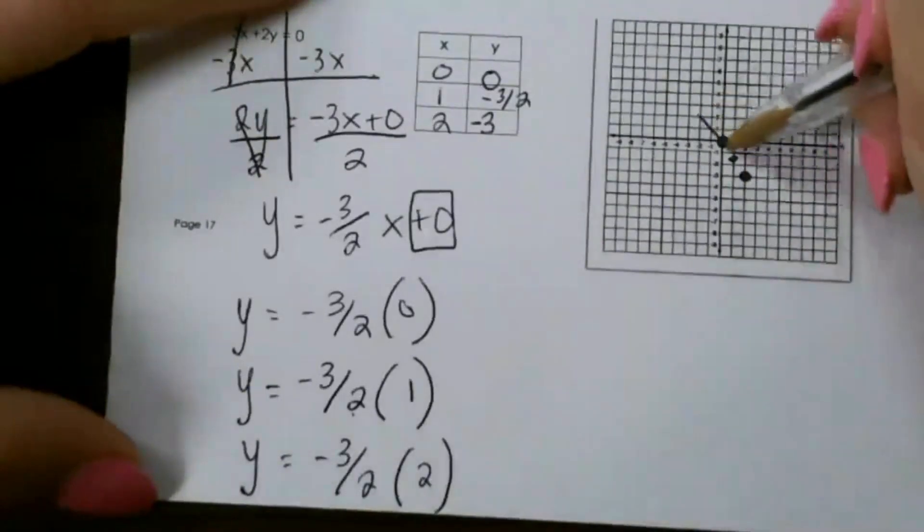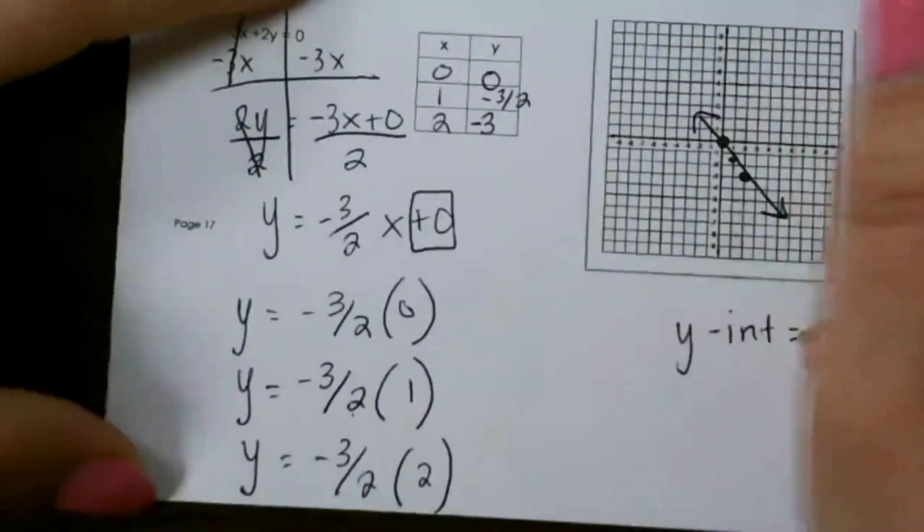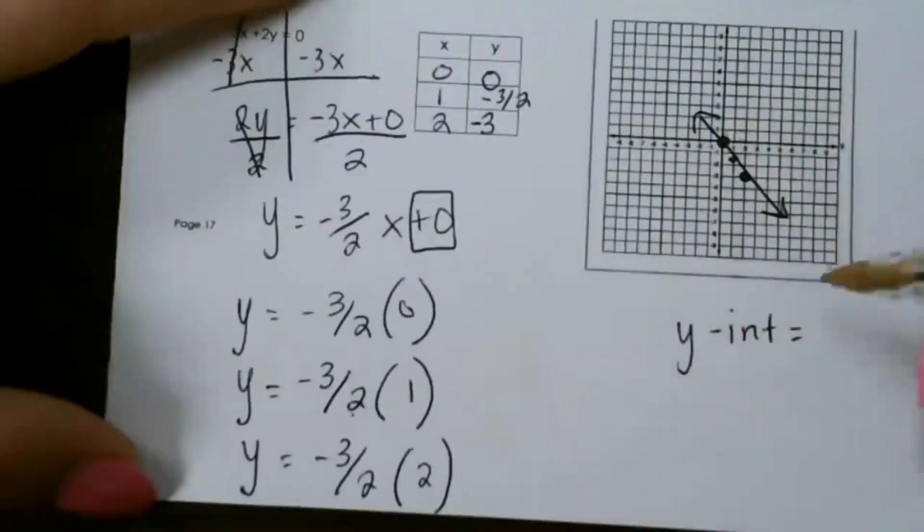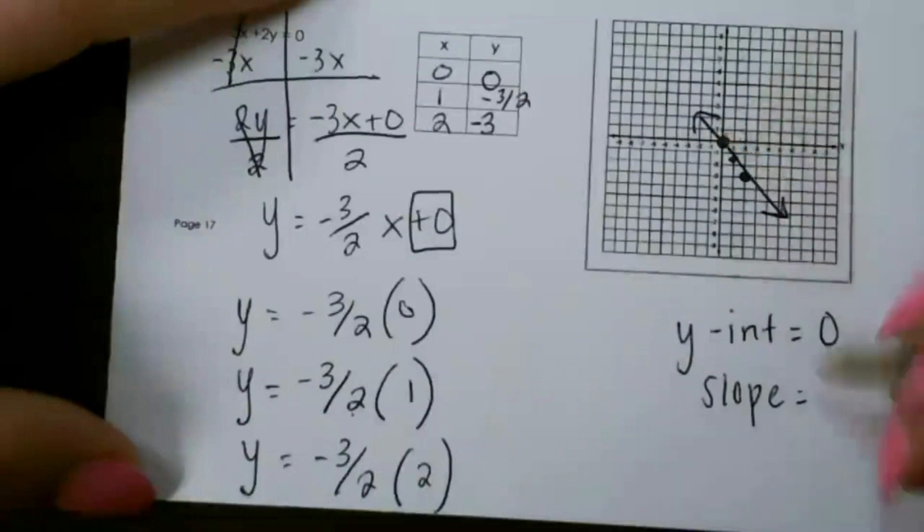So this would be our line and our y-intercept would be 0 because it crosses the y-axis at 0. And our slope would be rise of 1 and run of 1. So our slope is going to be about 1 and a half.